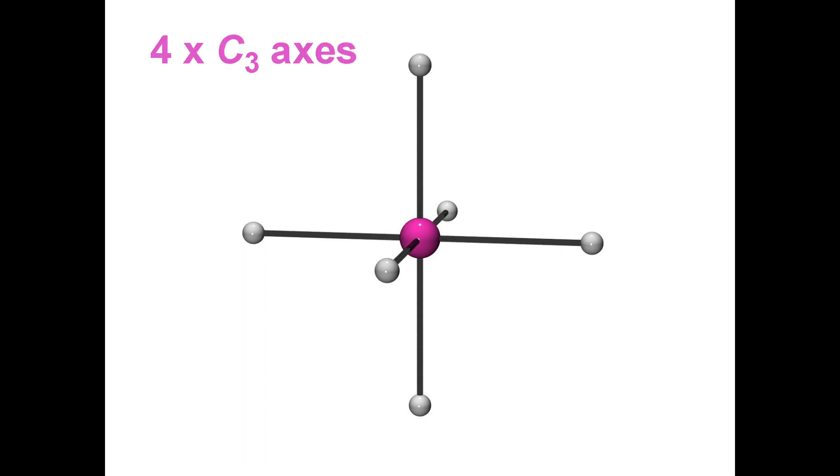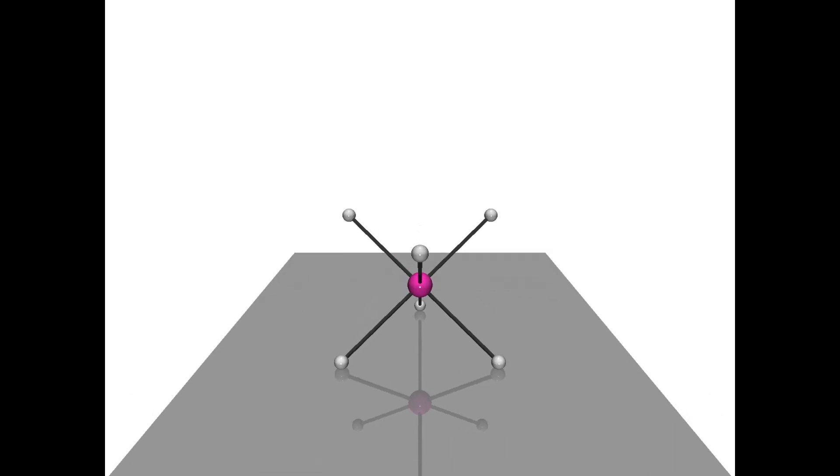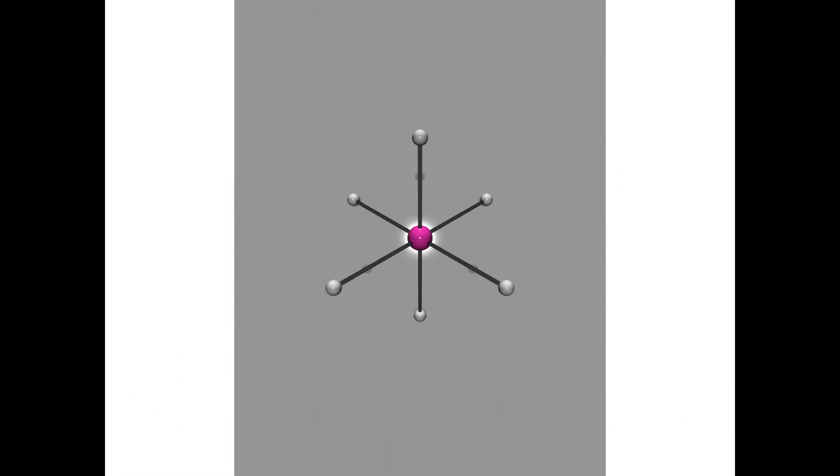There are four C3 axes, but remember that each of these is a C3-1 and a C3-2 axes, for a total of eight. The easiest way to find the C3 axes is to drop your molecular model down onto a tabletop. You'll notice that the molecule sits on a tripod of atoms. Looking at the molecule from above, you'll notice three atoms touching the surface, and three atoms pointing up towards you. You are looking straight down one of the C3 axes.